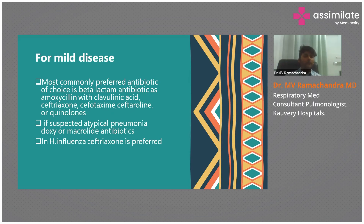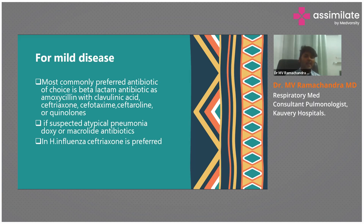For atypical pneumonia, the presentation is not a typical consolidation — it can be peripheral, patchy, or a lower lobe consolidation. For atypical pneumonias you can add macrolide antibiotics such as azithromycin or clarithromycin, or doxycycline. Macrolide resistance is increasing — azithromycin was heavily overused during the COVID era — so most people now go with doxycycline for atypical coverage.